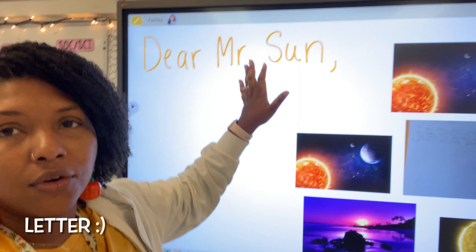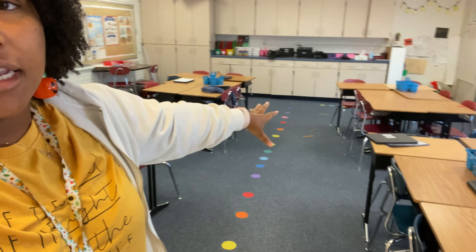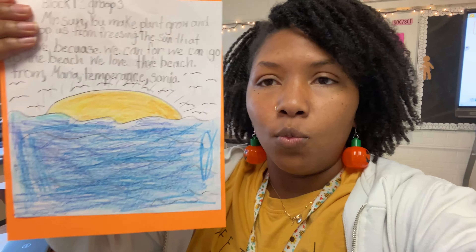We are writing a story called 'Dear Mr. Sun.' Each group — I have four groups — has to give a sentence about why they appreciate the sun, like 'Thank you, Mr. Sun,' or how life would be without the sun. Each group is going to do that. They're going to put their drawings on one paper and draw a picture. The leader is going to draw the picture and do all the writing. Everybody's going to write their own in their journals, but the leader compiles it into one paragraph.